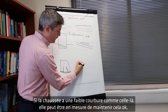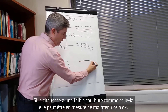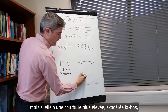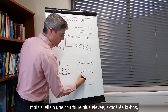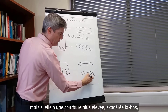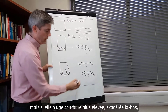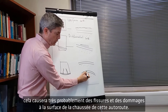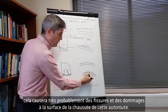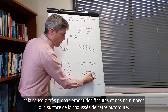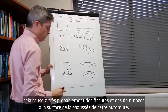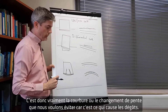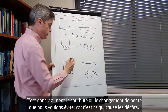So that is going to cause the damage and the cracks in the building. The same goes for a pavement — if the pavement has a low curvature it may be able to sustain that okay, but if it has a higher curvature, that is going to quite likely cause cracking and damage in that highway pavement surface. So it is really the curvature or the change in slope that we want to avoid because that's what causes the damage.